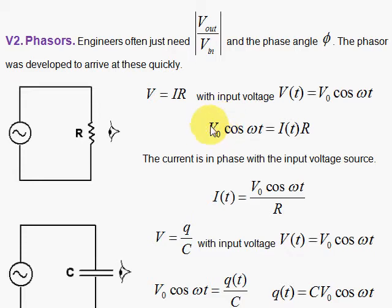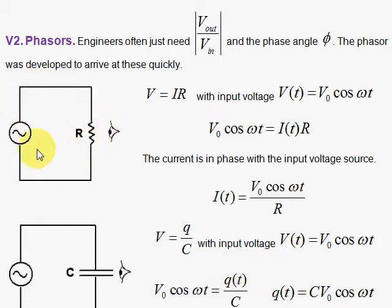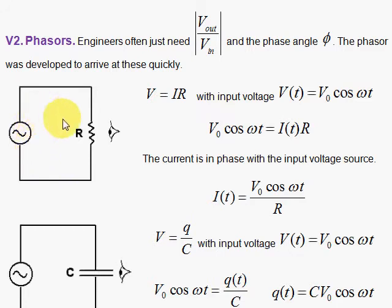In this section, we're going to develop the concept of the phasor. Here we have two simple circuits. We'll start with the resistor — isolating just the resistor in one loop with a voltage generator. This is generating a cosine function: voltage equals amplitude V₀ times cosine of omega t, and that's alternating current.